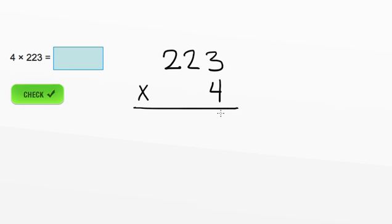So now we can start multiplying. We start all the way over to the right with the numbers in the ones place. So we want to know what 4 times 3 is. Well, 4 times 3 is 12.